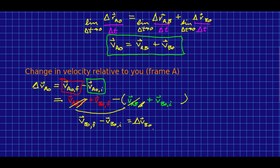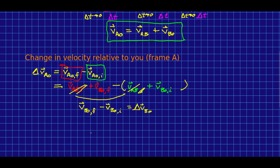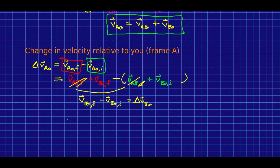Delta v relative to Trogdor is just the same as delta v relative to u. That's nice and simple. So, if we now want the accelerations, we'll do the same trick we just did. We will just divide both sides by delta T.